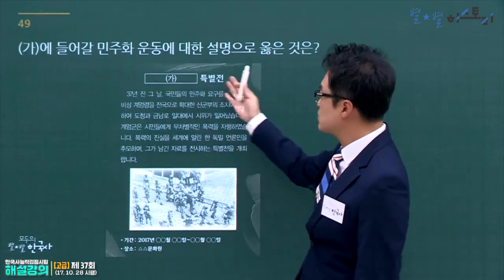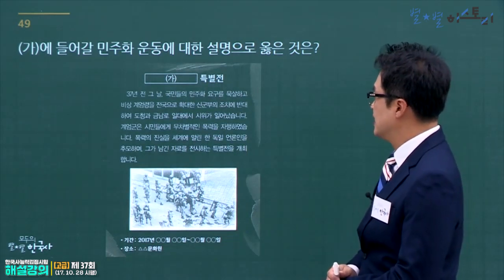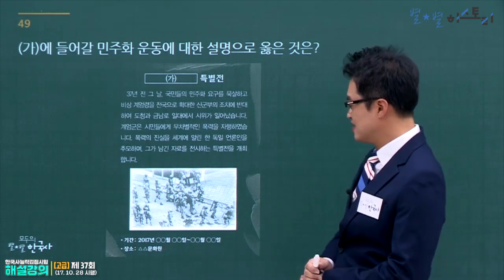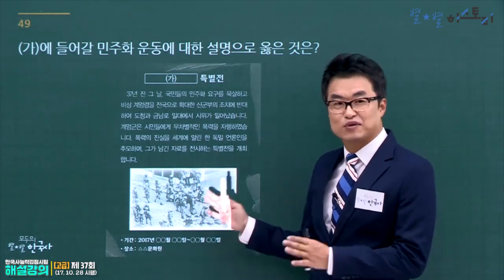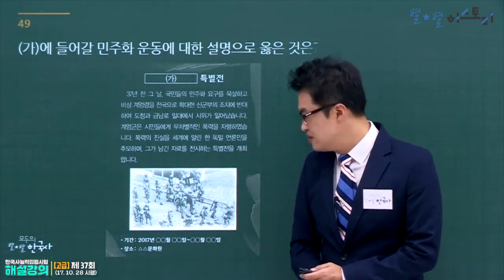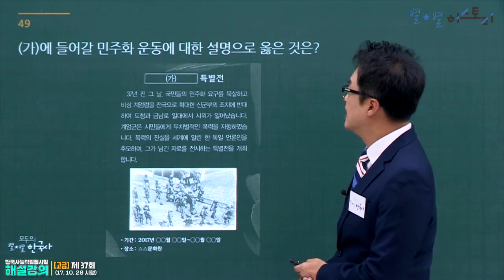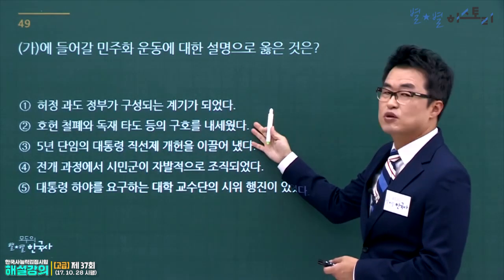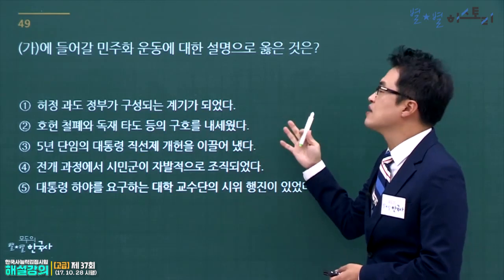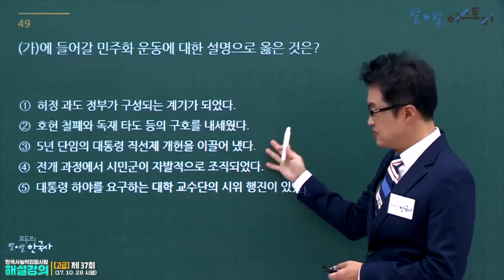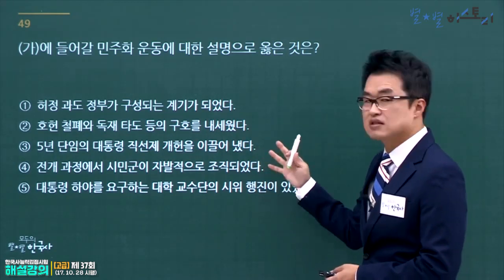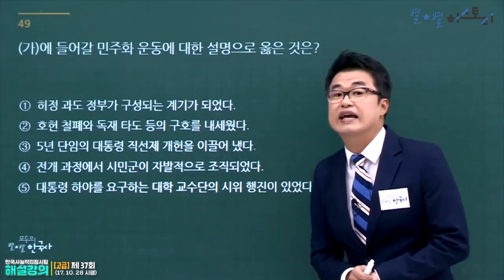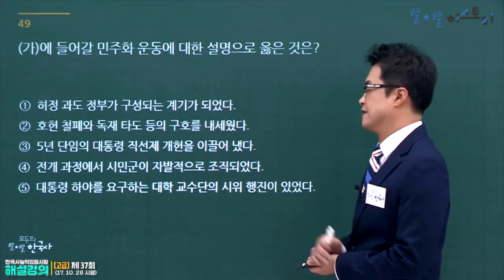계엄군, 독일 언론인, 택시운전사 영화와 관련된 민주화운동은 5·18 민주화운동입니다. 허정 과도정부 구성 계기는 4·19혁명, 호헌 철폐·독재 타도는 6월민주항쟁, 5년 단임 대통령 직선제는 6월민주항쟁 결과, 대통령 하야 요구 시위는 4·19와 연결됩니다. 시민군이 자발적으로 조직된 것이 5·18 민주화운동 특징이므로 정답은 4번입니다.